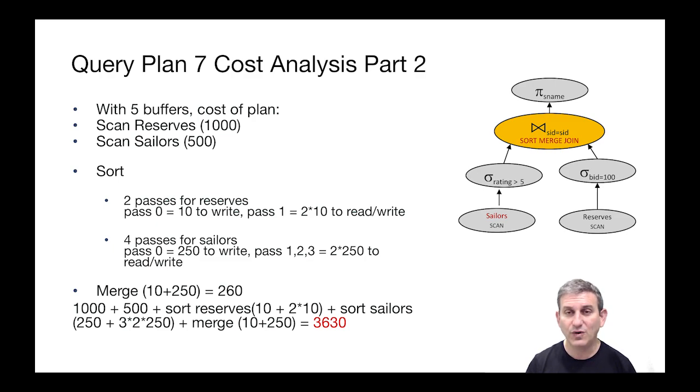For sailors, pass zero, we're going to get the read for free. Again, the write is 250 pages. It's half of the sailors. Passes one and then two and then three are all going to do a read and a write of those 250 pages.